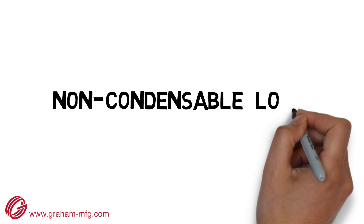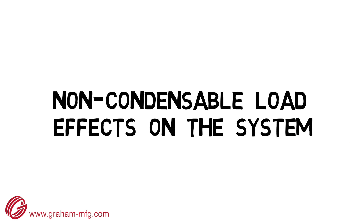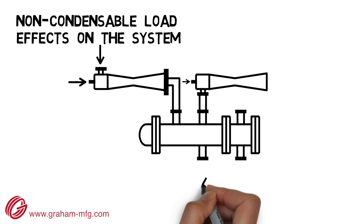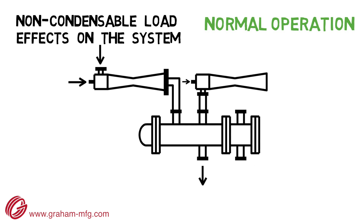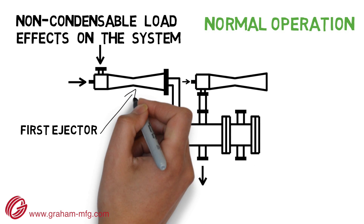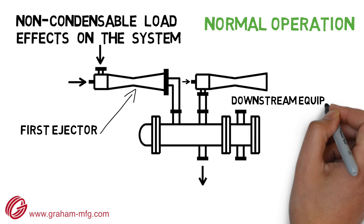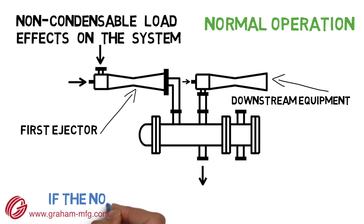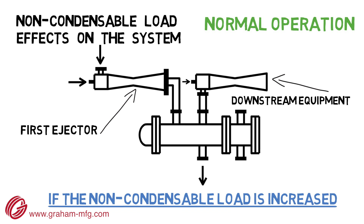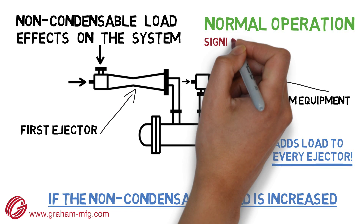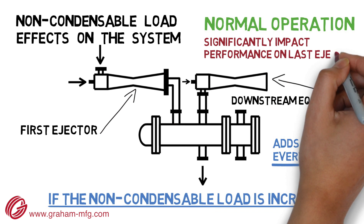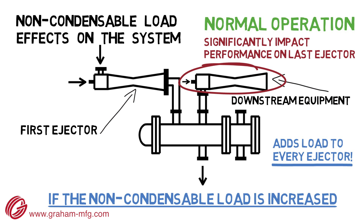Next, let's discuss the non-condensable load and the effect on the system. On a multi-stage system, it is very important to consider not only the effect on the first ejector, but the downstream equipment as well. If the non-condensable load is increased, this will add to every ejector. This can significantly impact the performance on the last stage ejector because it is typically a smaller size.